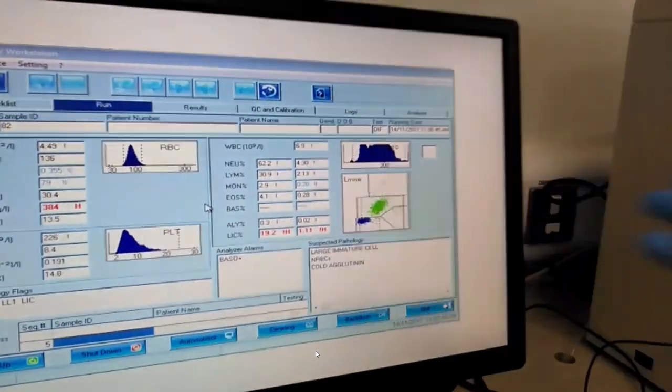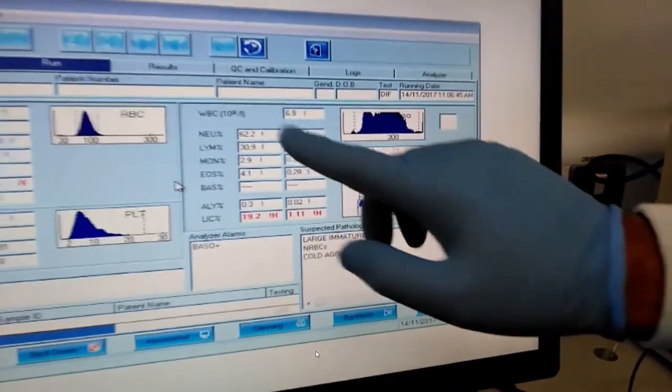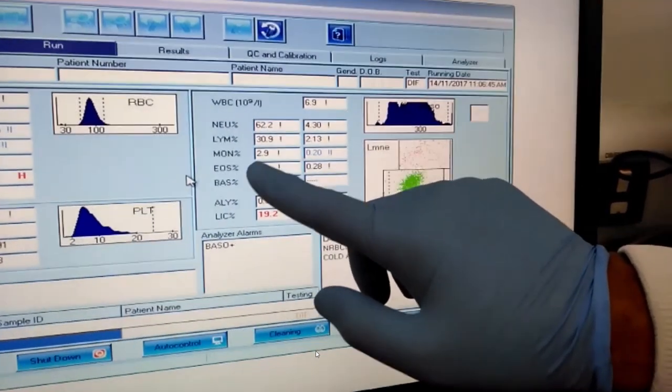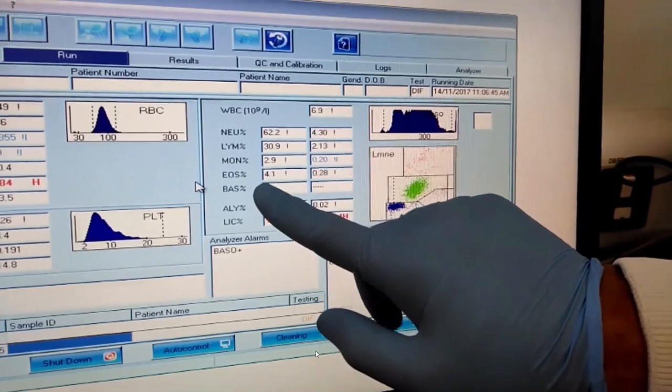On the other side, we can see the white cell differential count, including neutrophils, lymphocytes, monocytes, eosinophils, and basophils.